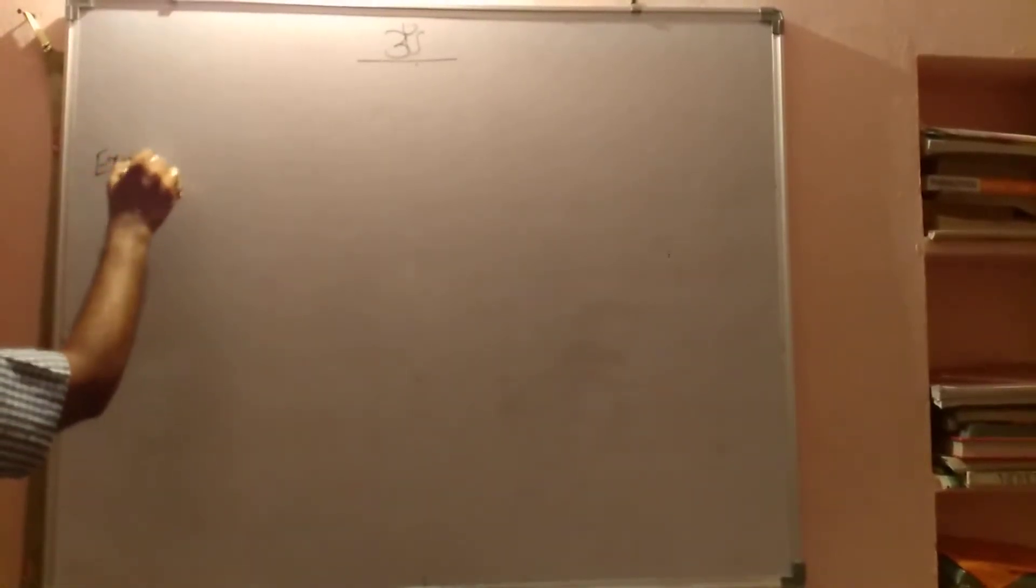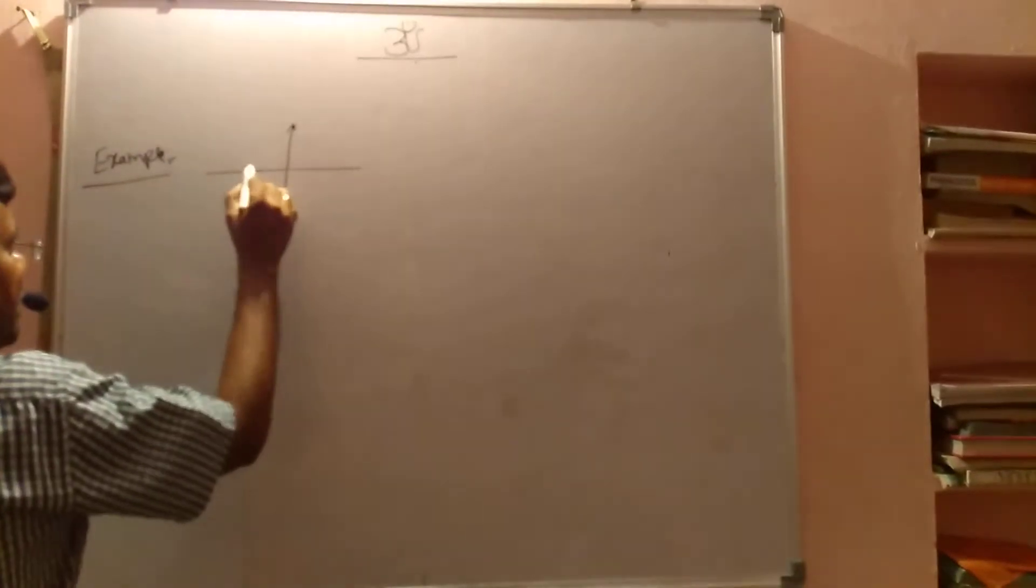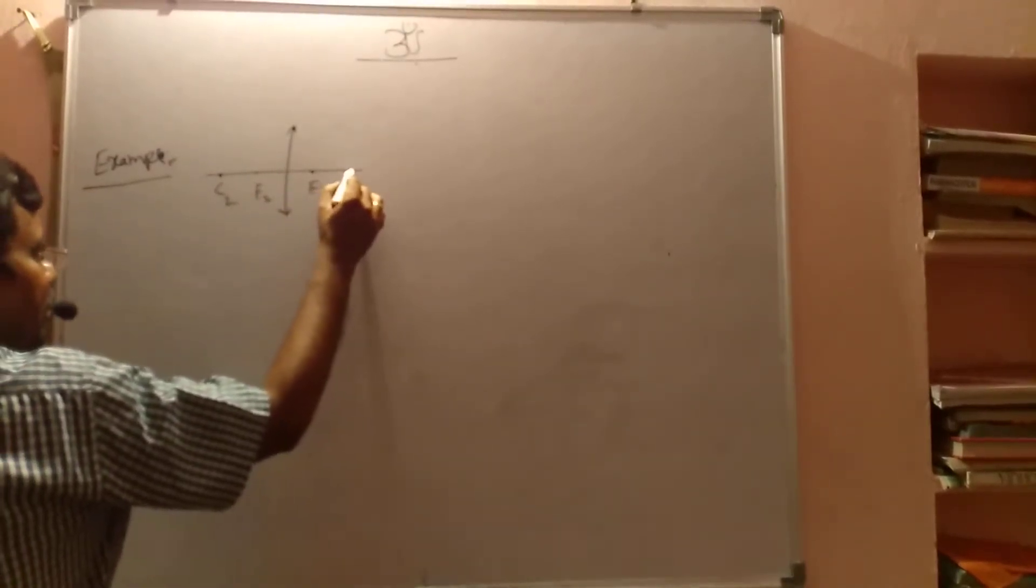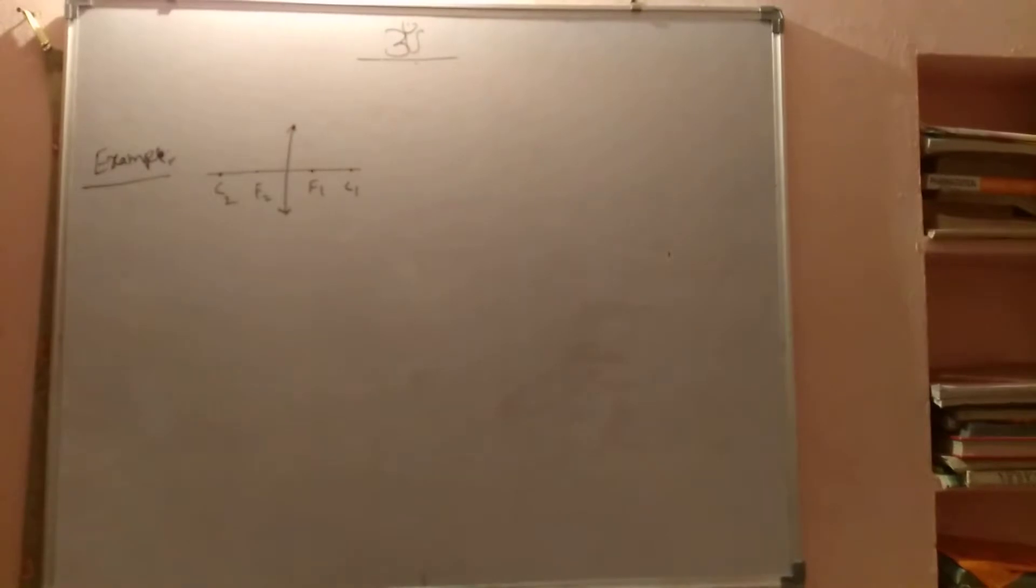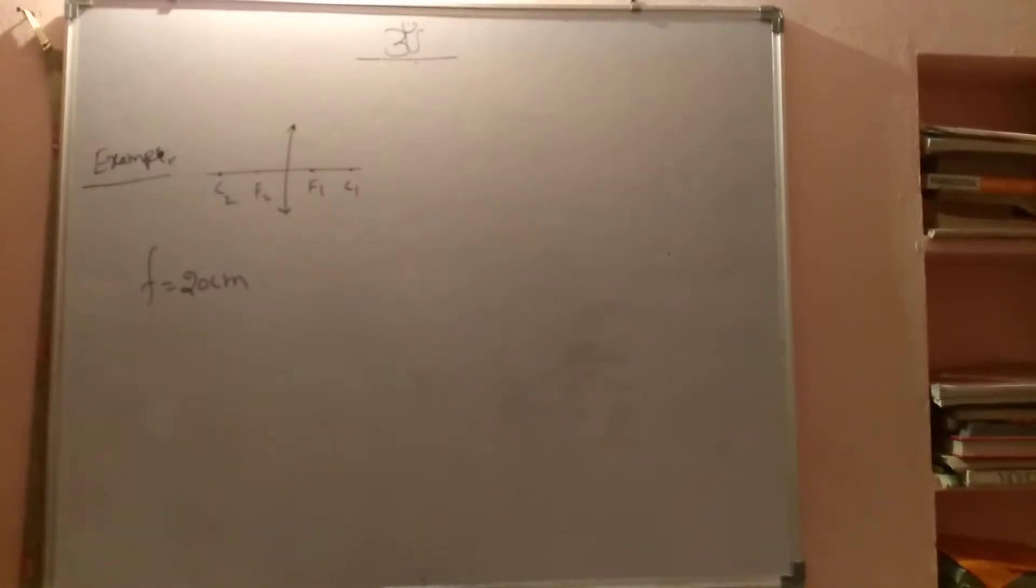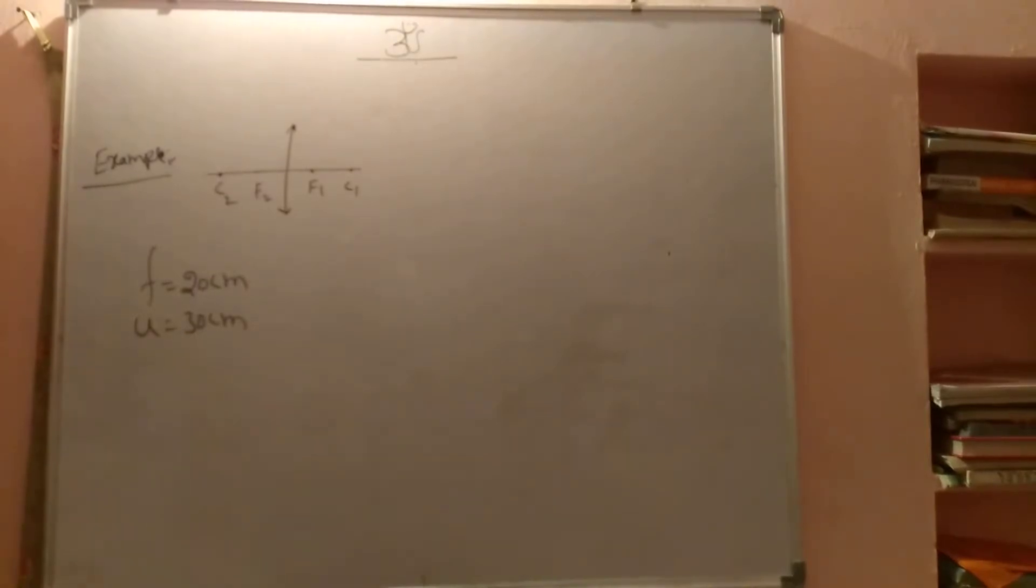Now we are discussing a problem belonging to convex lens. This is one convex lens I am assuming. This is F2 and C2, and this is F1 and C1. Now I am assuming the focal length of a given convex lens is 20 cm. Object distance I am taking as 30 cm. First thing, we are finding the image distance.